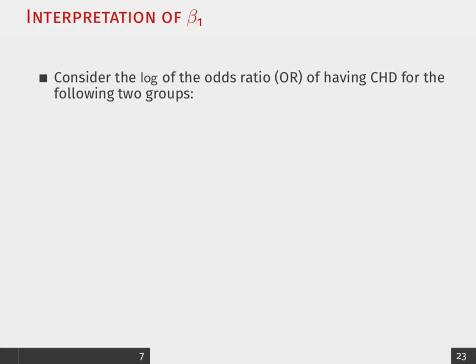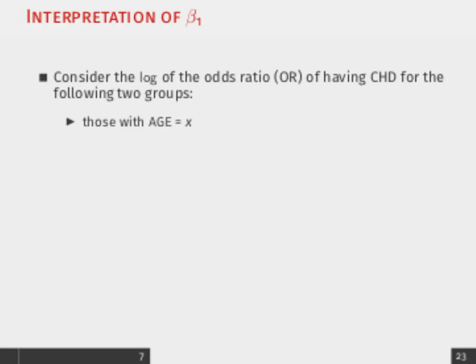Now, moving on, let's think about how we would actually interpret this beta 1, then. So, consider the log odds of having CHD for an age group, let's just say x.